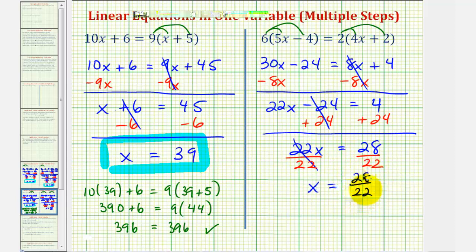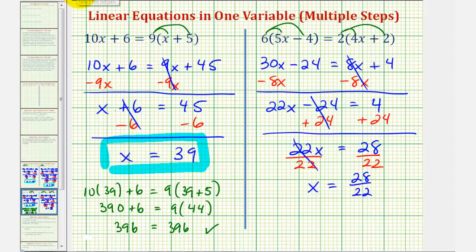But this fraction does simplify. 28 and 22 share a common factor of 2. So if we divide the numerator and denominator by 2, we can simplify our fraction. We'll have x equals, this would be 14/11, which is our solution.